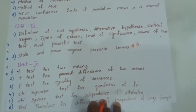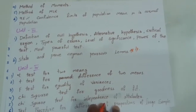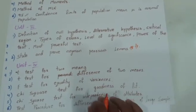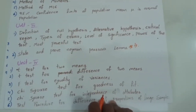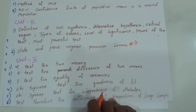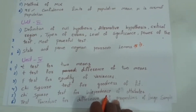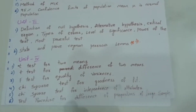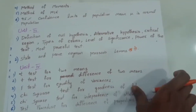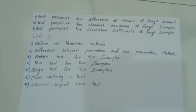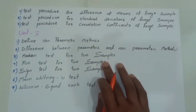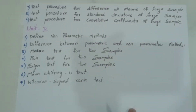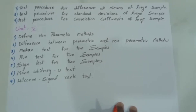Unit 4 covers: T-test for two means, T-test for difference of two means, and F-test for equal variances. Also, chi-square test for goodness of fit, chi-square test for independence of attributes, and test procedure for difference of proportions for large samples. Additionally, test procedure for difference of means of large sample and test procedure for standard deviations of large sample.